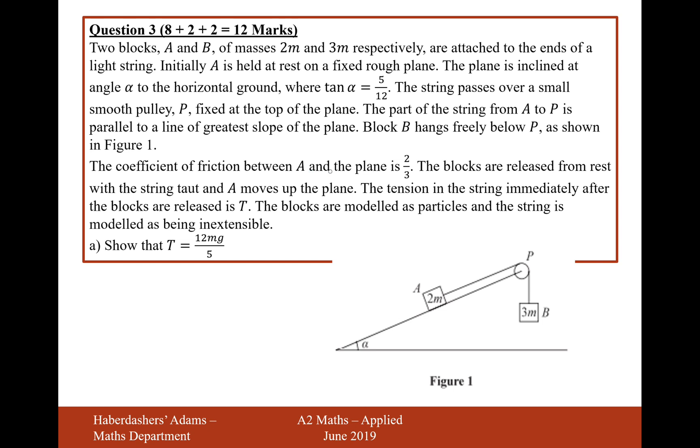The coefficient of friction between A and the plane is 2 thirds. The blocks are released from rest and A moves up the plane. The tension in the string immediately after the blocks are released is T. The blocks are modelled as particles, and the string is modelled as being inextensible. Show that T equals 12MG over 5.